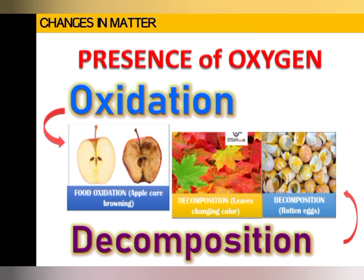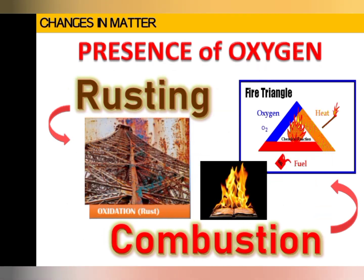Another example is decomposition, which is also brought about by exposure to oxygen. A change in color is due to exposure to oxygen, so there is a chemical change in the presence of oxygen. Another change brought by oxygen is rusting and combustion. Combustion is the scientific word for burning.